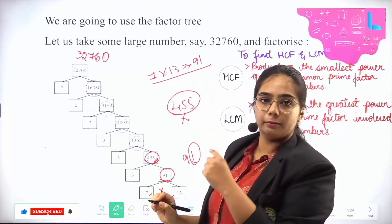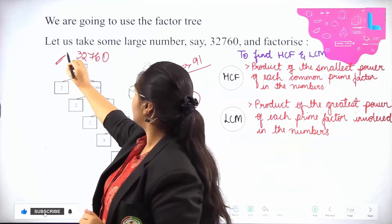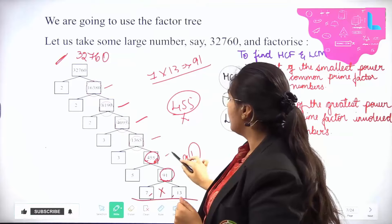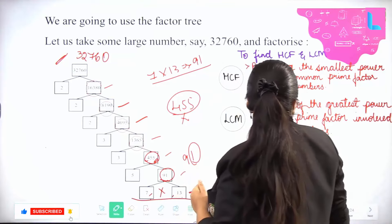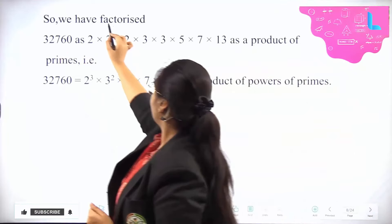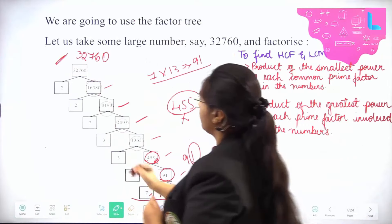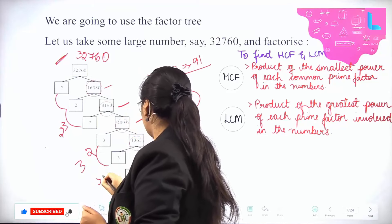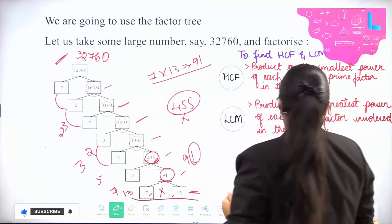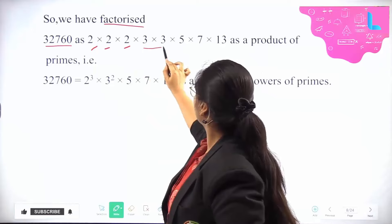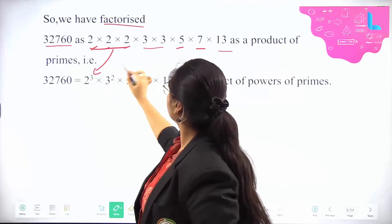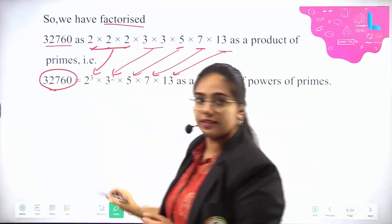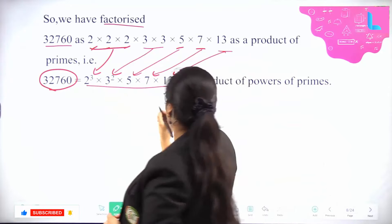Both 7 and 13 are prime numbers. Hence, we stop here. The starting number was 32,760. You should not stop until both resulting numbers are prime. The first step gave composite, then composite again and again — keep going until you reach all primes. So 32,760 = 2 × 2 × 2 × 3 × 3 × 5 × 7 × 13, which is represented as 2³ × 3² × 5 × 7 × 13.